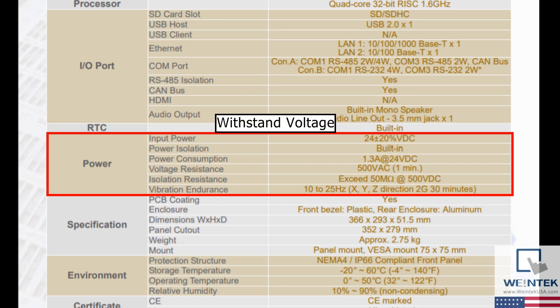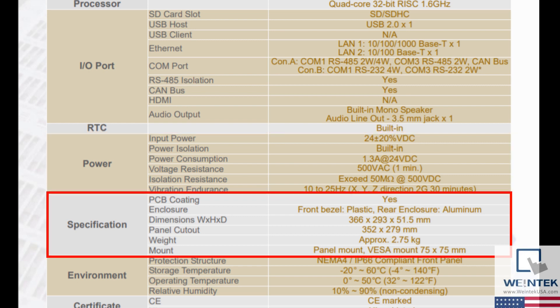This voltage resistance is also called withstand voltage in the industry. Isolation resistance shows the limit to resistance of the flow of electrical current, which is 50MΩ at 500V direct current. The vibration resistance is how much vibration the unit can withstand. For the 3152X, it is 10 to 25 Hz in the X, Y, and Z direction at 2 times gravity for 30 minutes.